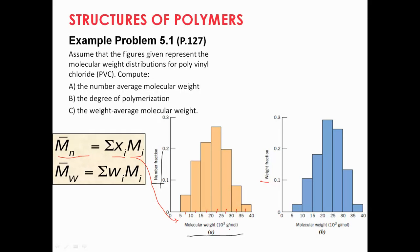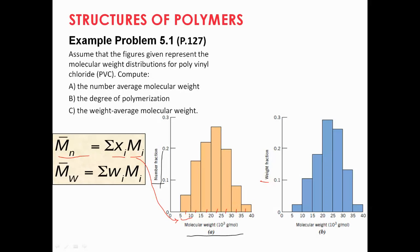The average value for each range can be easily found. You start from 7.5 and just add the size of each range. The size of each range is 5, so starting from 7.5, the next values are 12.5, 17.5, and so on, adding 5 each time. The same approach applies for the weight average molecular weight.